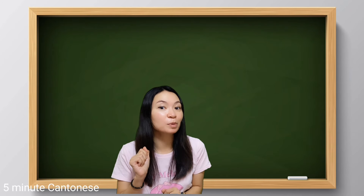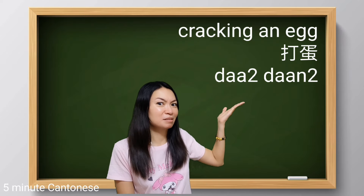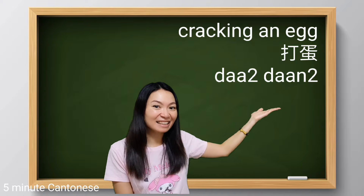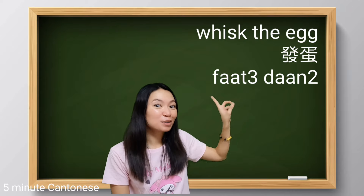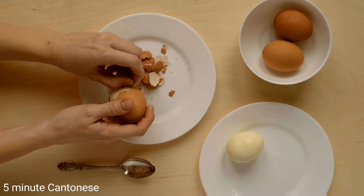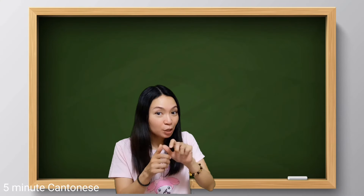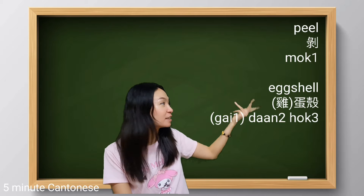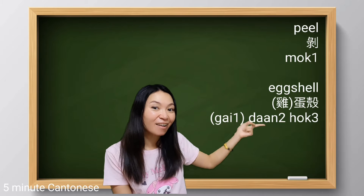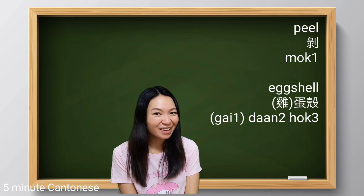Now let's learn some verbs related to egg. First, what is this action? In Cantonese, to beat an egg is 打蛋. How about to whisk it? To whisk the egg is 撥蛋. You can either say 剁雞蛋殼 or 剁蛋殼 for cracking the egg shell.